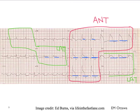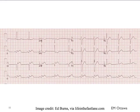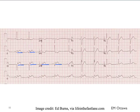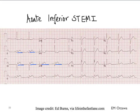Every time you see ST elevations belonging to the same territory, you have to think there is a blocked vessel and therefore an infarction. Looking at another ECG — the ST elevations are in leads 2, 3, and AVF, which is the inferior portion of the heart. Therefore, this is an acute inferior ST elevation myocardial infarction.